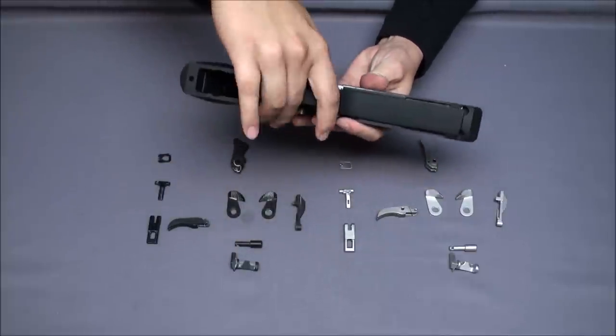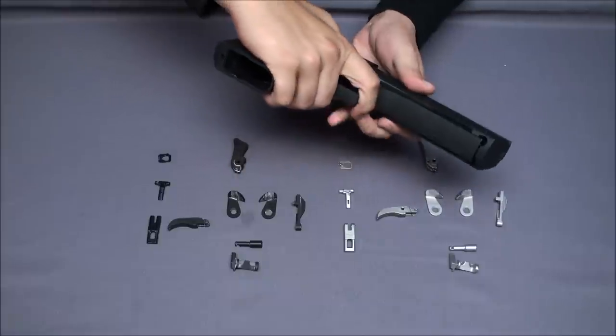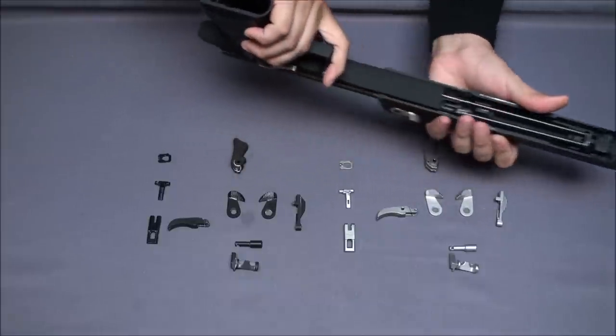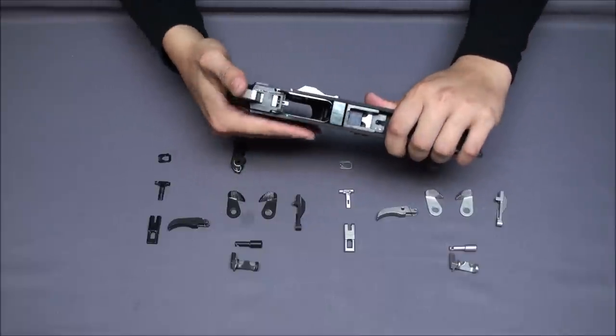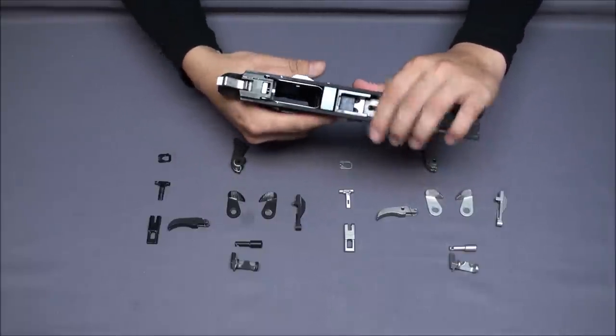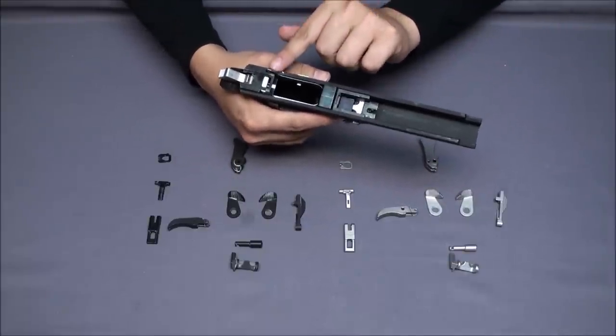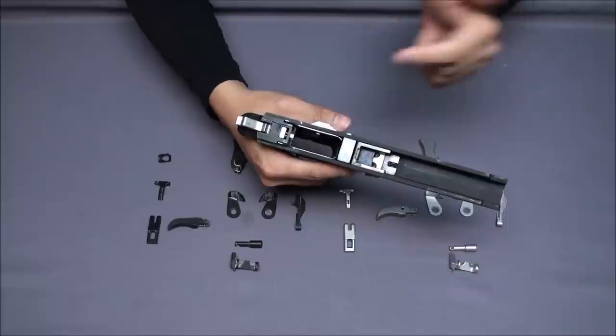Once we field strip this gun and see the internals, you can see the fire pin and the valve lock and the sear—they are hidden inside the assembly.